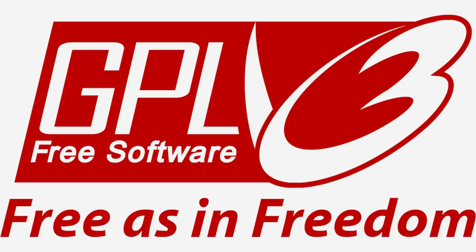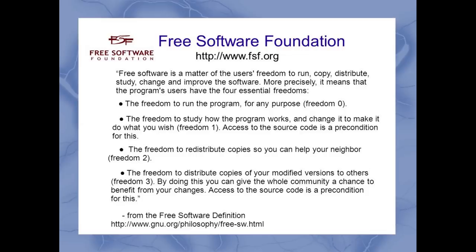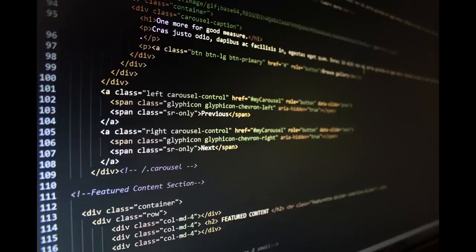Free software is software that respects a user's freedom by providing these four essential freedoms: to run the program as you wish for any purpose; to study the source code and how the program works, and to be able to change it so that it works the way that you want it to; the freedom to redistribute original copies of that software in order to help others; and the freedom to distribute your modified copies to others as well. At the core of free software is the source code being open and available, because you can't study a program, you can't modify it, or distribute modified copies without access to that code.